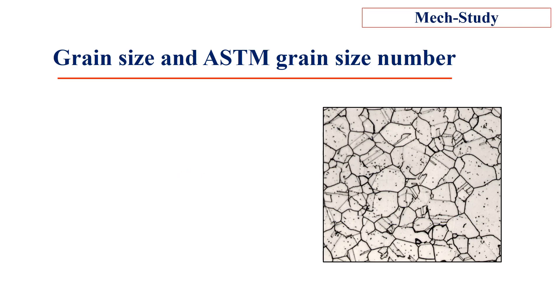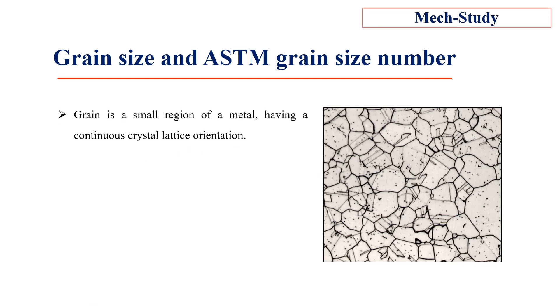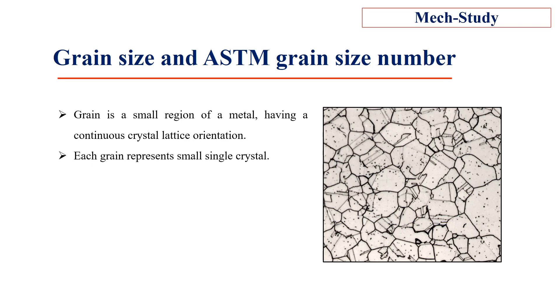A grain is a small region of metal having a continuous crystal lattice orientation. Each grain represents a small single crystal.